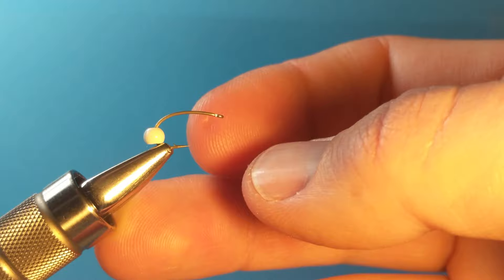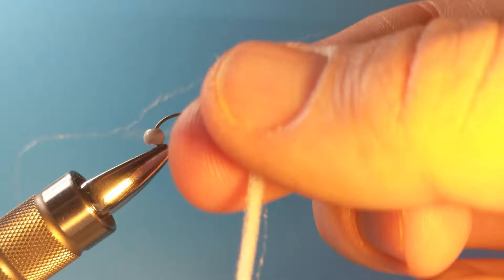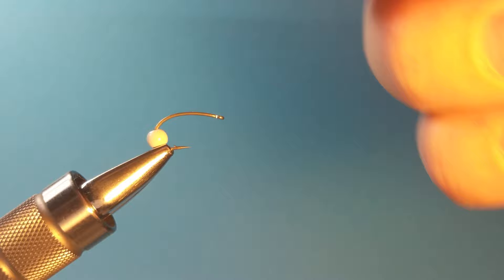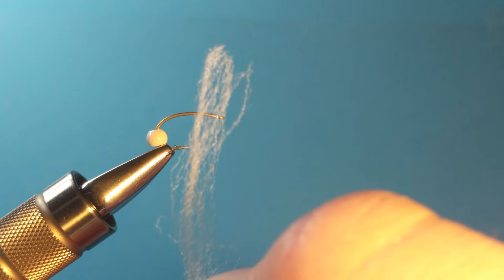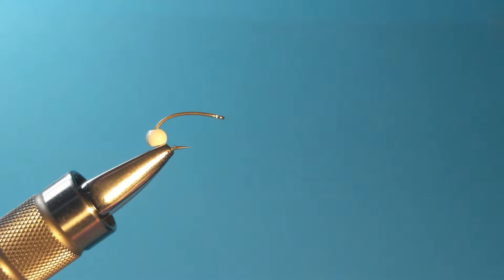Now we'll also need some sort of synthetic, this is just a synthetic type of thread that will act as the gills. I'm not entirely sure what this is actually but it's basically just some sort of synthetic fibers. White is what you'll want. So the first thing we're going to do is tie that in in front of the bead.